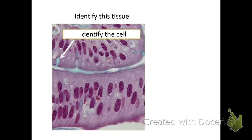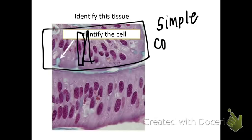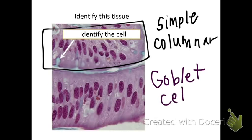Take a second and see if you can figure this one out. You've got one layer right here, so that means it's simple. And if you look, the cells are long, so that means it's simple columnar. This structure is a goblet cell, and that's what secretes the mucus in the uterus and in the intestines — we said in class: slippery.